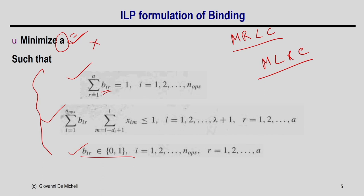A third use: try A=1 and check if all operations can map to one FU. If the solution exists, one is the minimum. If the constraint is not satisfied, increase to A=2 and ask again; if feasible, 2 is the minimum; otherwise try 3, and so on. These are three ways to utilize this ILP formulation.